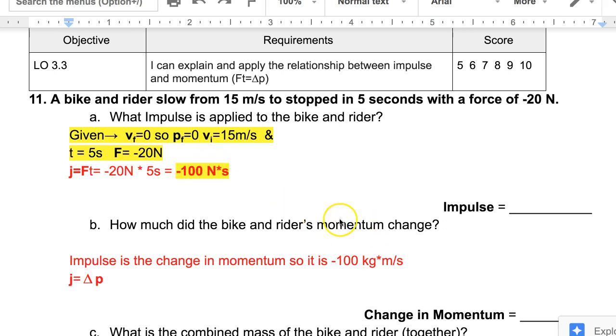How much did the bike and rider's momentum change? Well, that's what the impulse is, the change in momentum. Impulse J equals delta P. Remember, delta means change. Change in momentum. So it's the same answer. Negative 100 kilogram meters per second.